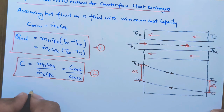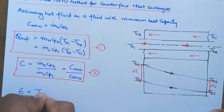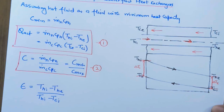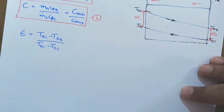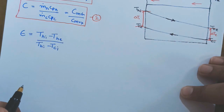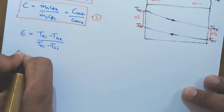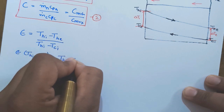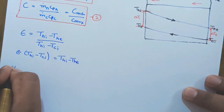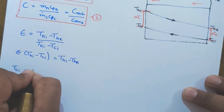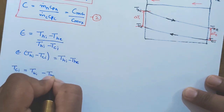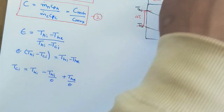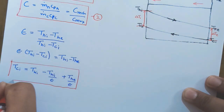Now, effectiveness in this case will be (THi minus THe) upon (THi minus TCi). So from here, Epsilon times (THi minus TCi) is equal to (THi minus THe). And from here, I will get THe as THi minus (THi minus TCi)·Epsilon, which is the same result we got in the case of parallel flow.